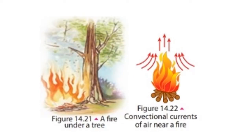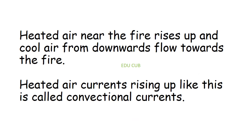Next is convection. You may have seen that small twigs of trees above a large fire are waving — what can be the reason for this? Heated air near the fire rises up, and a cool layer from below flows towards the fire. These heated air currents rising up are called convection currents. When these currents strike the twigs of the trees, they start to wave.